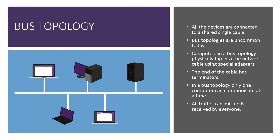The thing about a bus topology is only one device can communicate at a time. Bus topologies are what's considered half duplex, meaning you can't transmit and receive at the same time. If two devices do try to transmit at the same time, you'll end up having collisions. And that was a huge problem with the bus topology.